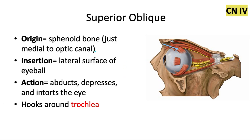Then we have the superior oblique muscle. It originates on the sphenoid bone, just medial to the optic canal, and it inserts into the lateral surface of the eyeball. It acts by abducting, depressing, and in-torting the eye, which means a medial rotation of the eye.